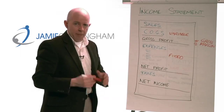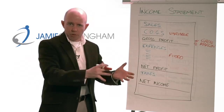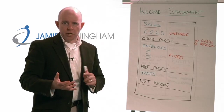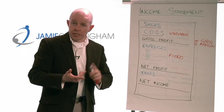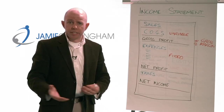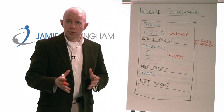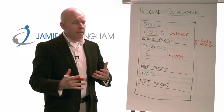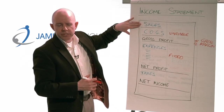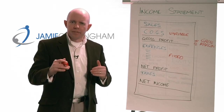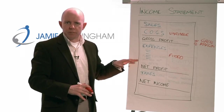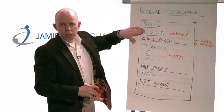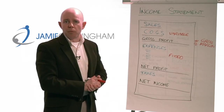Once we've got our gross profit — how much is left after paying for all materials and goods to supply our goods and services — we subtract our fixed expenses. Fixed expenses are things like rent, utilities, telephone, travel, education, accounting fees, and other professional fees. These are costs you're going to incur whether you make any sales or not. Cost of goods sold should really only be things that go up and down when you make sales — that's it.